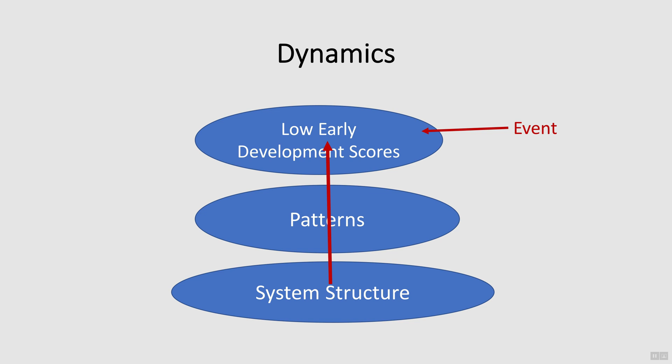Causal Loop diagrams map a problem and show the dynamics of the problem. Being dynamic means that it changes over time. In order to use a Causal Loop diagram to map a problem, you must first ensure that the problem is dynamic, otherwise it won't work.